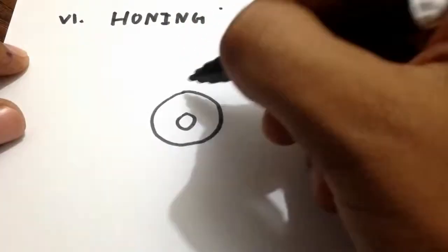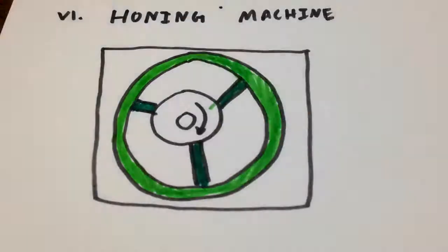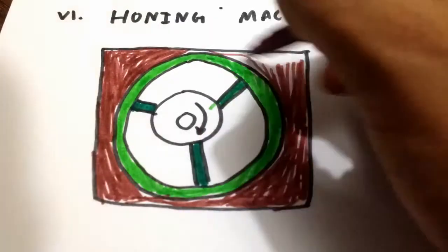Sixth, Honing Machines. Honing is an abrasive machining process that produces a precision surface on a metal workpiece by scrubbing an abrasive stone against it along a controlled path.